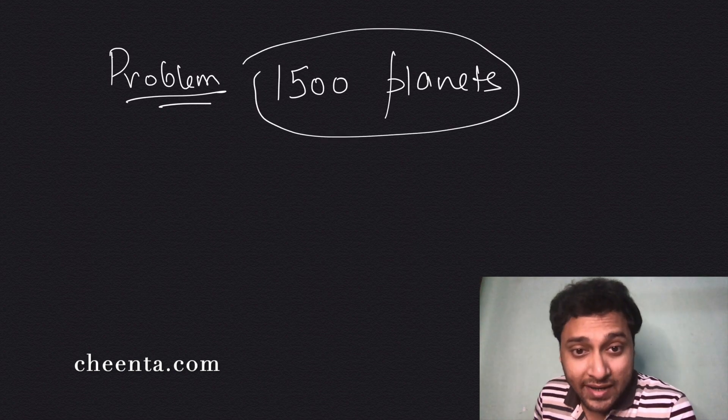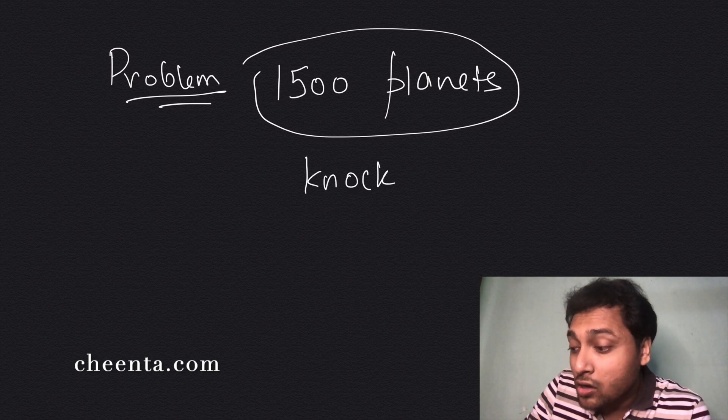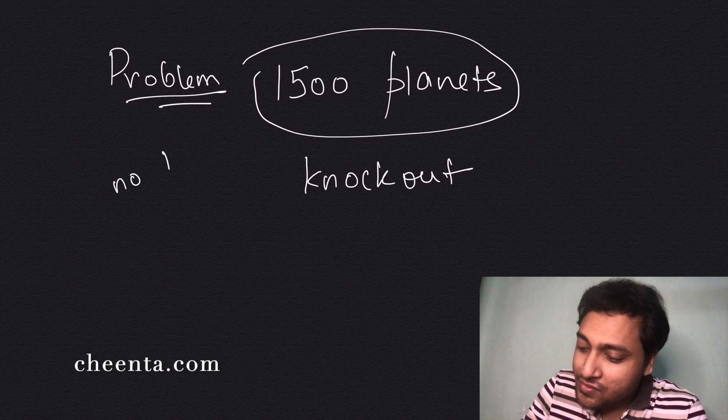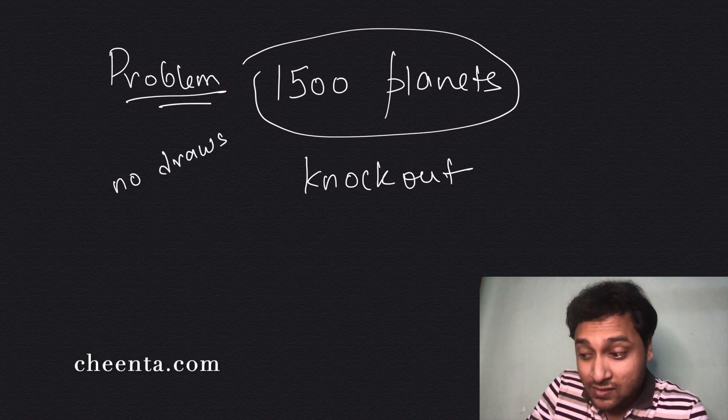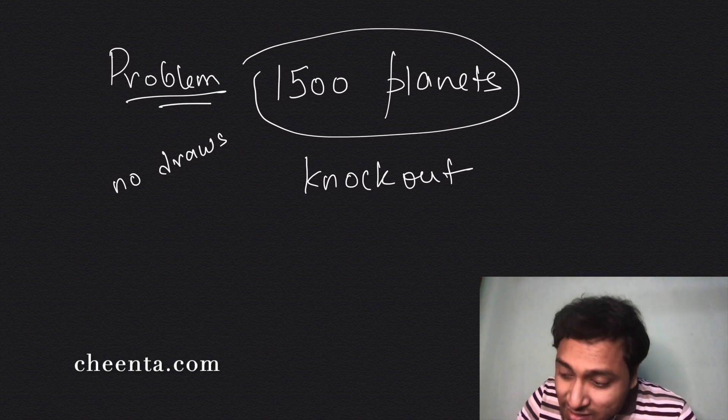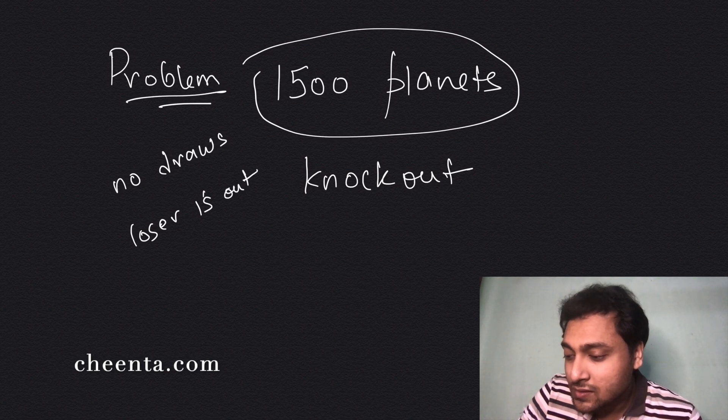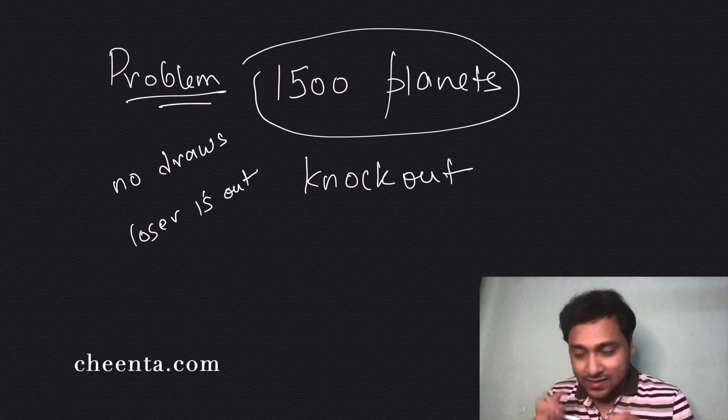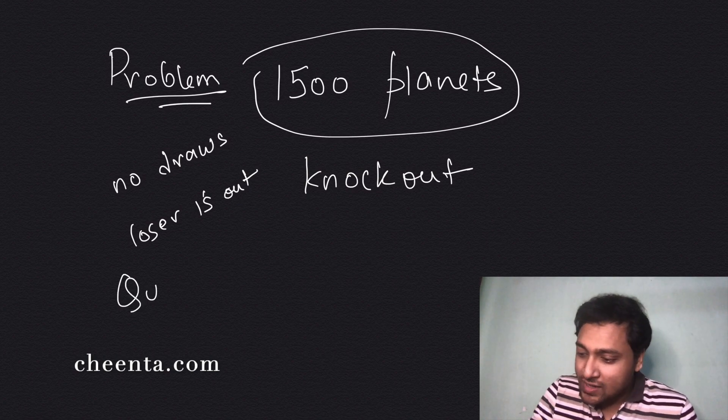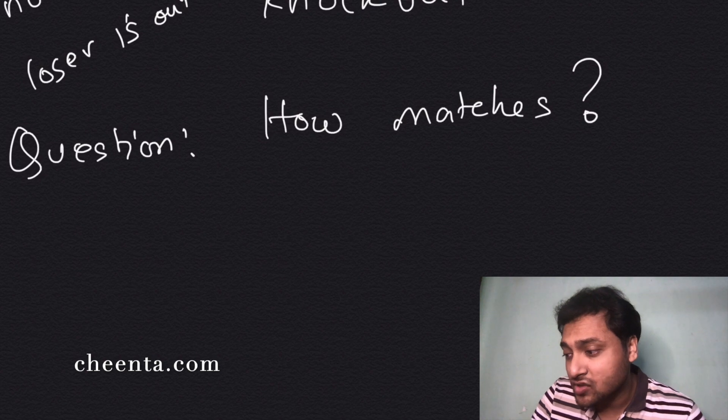Knockout means there are no draws, so no match can end in a draw and the loser is out. If you lose a match you're out of the tournament, that's it. The question is: how many matches are played in the tournament before the winner is declared?